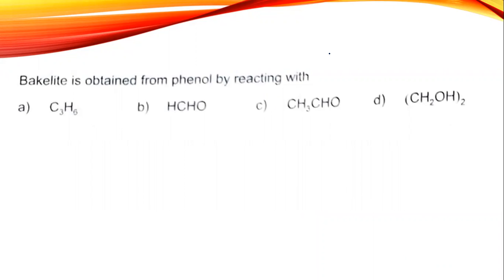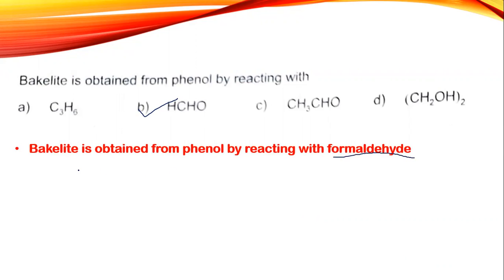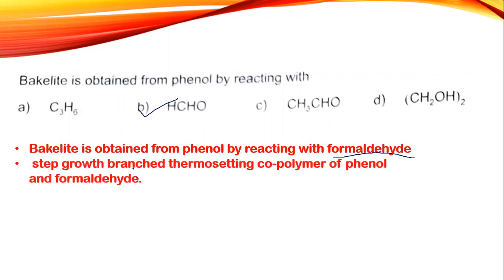First question today is from the part of polymer. Bakelite is obtained from phenol by reacting with formaldehyde or HCHO. Bakelite is a polymer which is obtained from the reaction of phenol with formaldehyde, and it is a step growth branched thermosetting co-polymer. This is very important. In polymers they also ask about thermoplastic and thermosetting plastics. We have covered this in multiple videos, I will give the link in the description box below.